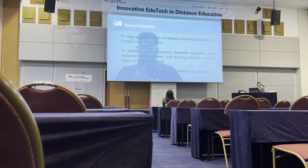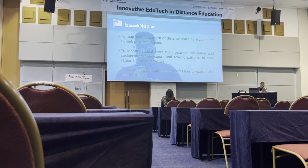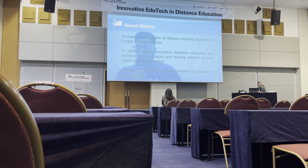The first objective of my research was to map the scoring pattern of distance learning students in Punjab and to see if there are any insights which can help improve the quality of education. The second objective was to identify the spatial correlation between education, socio-economic indicators, and scoring patterns in each region of Punjab. The third objective was to apply classical and spatial regression to explain the relationship between these indicators.